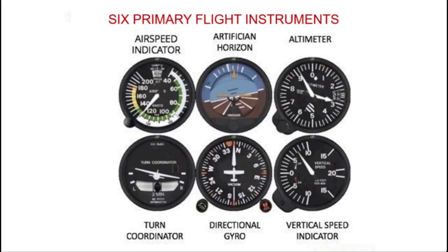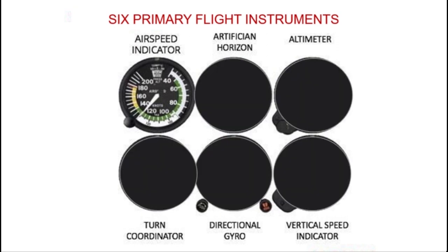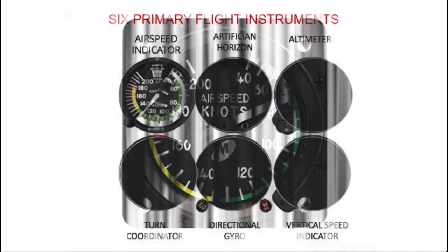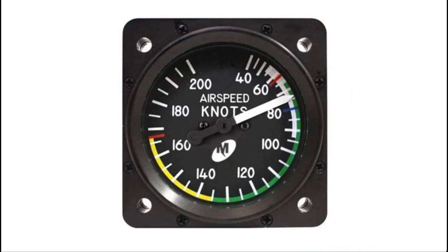The airspeed indicator is one of the basic flying instruments of the aircraft. It is a crucial instrument found on all aircraft that helps pilots determine the speed at which they are traveling through the air. The ASI is a critical instrument during takeoff and landing, where precise airspeed control is necessary, and during flight planning, where it helps pilots determine fuel consumption and estimated arrival time.